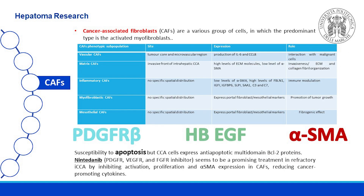Cancer-associated fibroblasts are a various group of cells in which the predominant type is the activated myofibroblast. They express several phenotypic markers, such as alpha-SMA, PDGFR-beta, FSP1, podoplanin, or CD10, and more. There are various populations of CAFs, each with different functions, such as vascular CAFs, matrix CAFs, inflammatory CAFs, myofibroblastic CAFs, and mesothelial CAFs, as shown in the table.